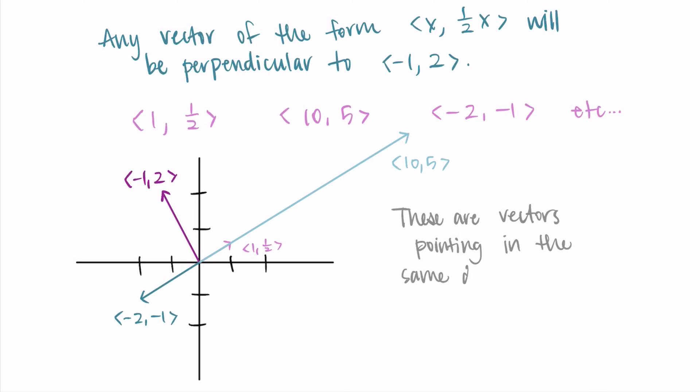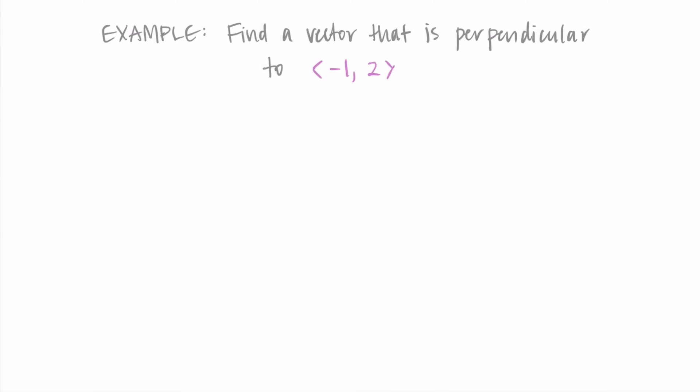So these vectors we found are vectors pointing in the same directions, so they're parallel to each other, but they have different magnitudes.